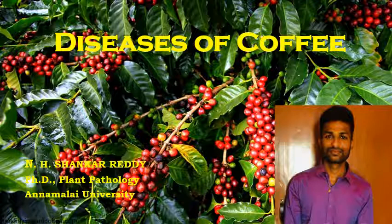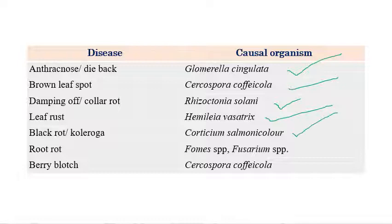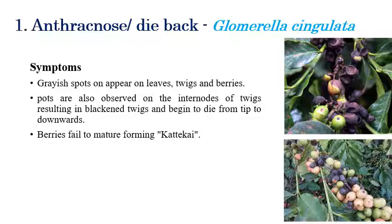Today we will see the list of important diseases in coffee. My name is N.H. Shankar Reddy and I am doing a PhD in Plant Pathology at Annamalai University. The important diseases in coffee are: anthracnose caused by Glomerella singulata, brown leaf spot caused by Cercospora coffeicola, damping off or collar rot caused by Rhizoctonia solani, leaf rust caused by Hemileia vastatrix, black rot or Coliroga caused by Corticium salmonicolor, root rot caused by Phoma and Fusarium species, and berry blotch caused by Cercospora coffeicola.